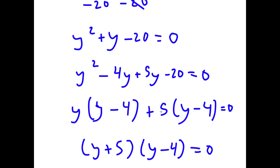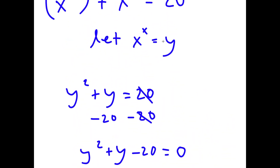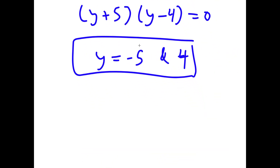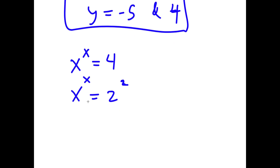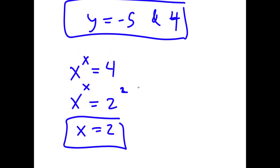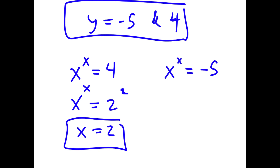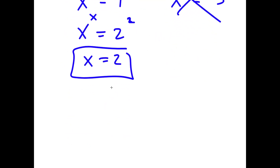We aren't done yet because we set x to the power of x equal to y. Starting with y equals 4: x to the power of x equals 4. Since 4 is the same as 2 squared, we have 2 squared equals x to the power of x, meaning x equals 2. For y equals negative 5: x to the power of x equals negative 5, which can't be written as a number to the power of that same number, so this is invalid. My only solution is x equals 2.